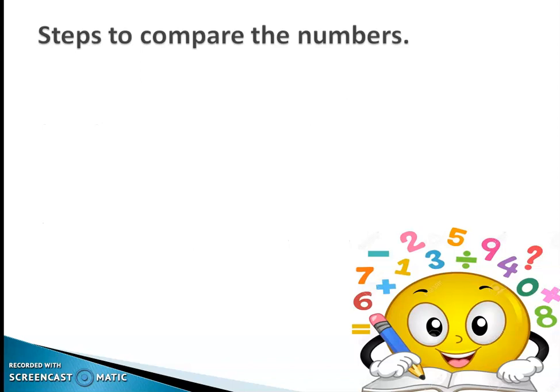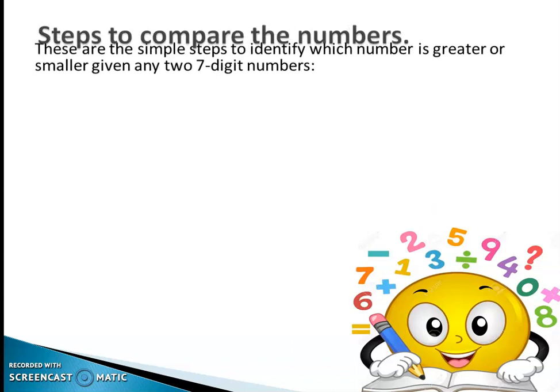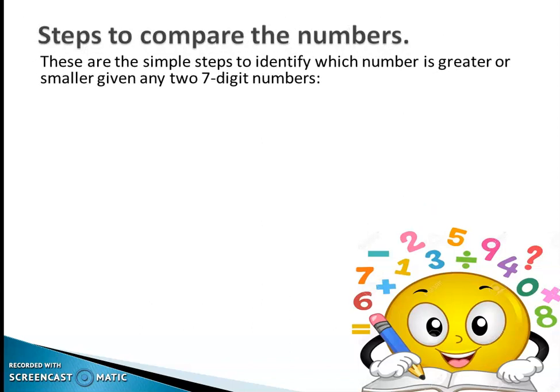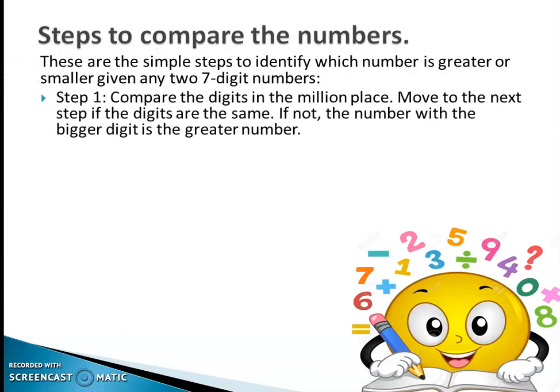These are the simple steps to identify which number is greater or smaller, given any two 7-digit numbers. Step 1: Compare the digits in the millions place. Move to the next step if the digits are the same. If not, the number with the bigger digit is the greater number.